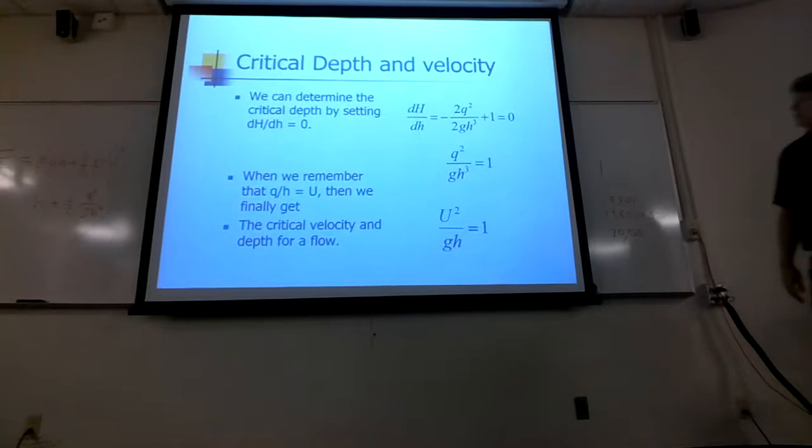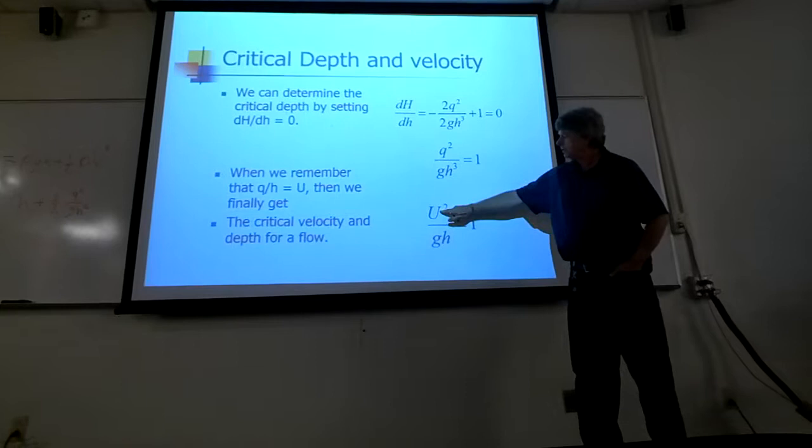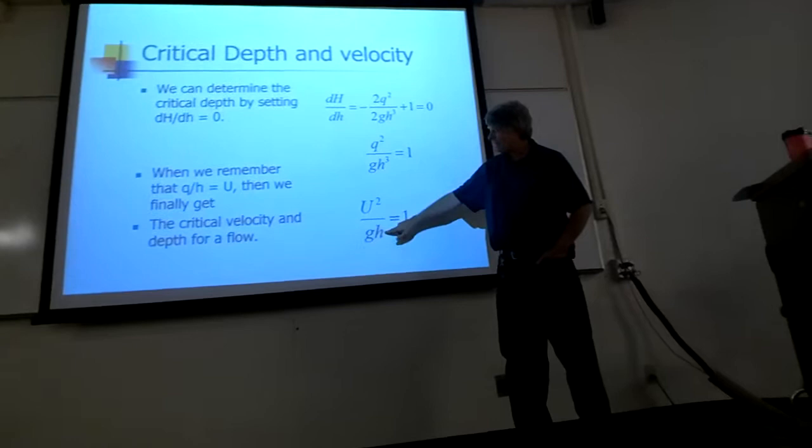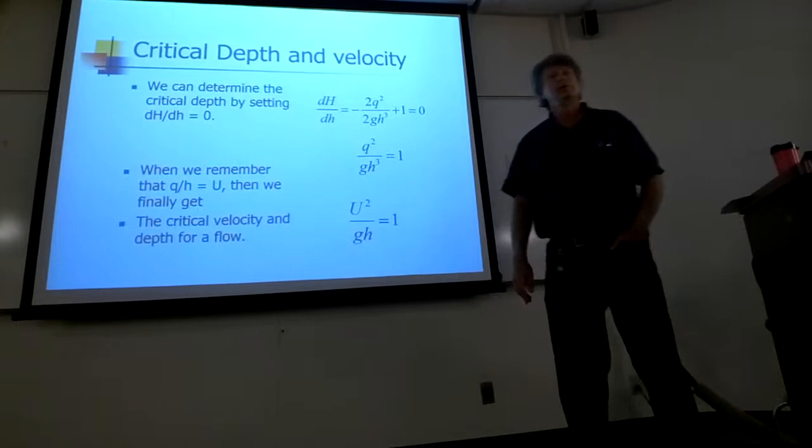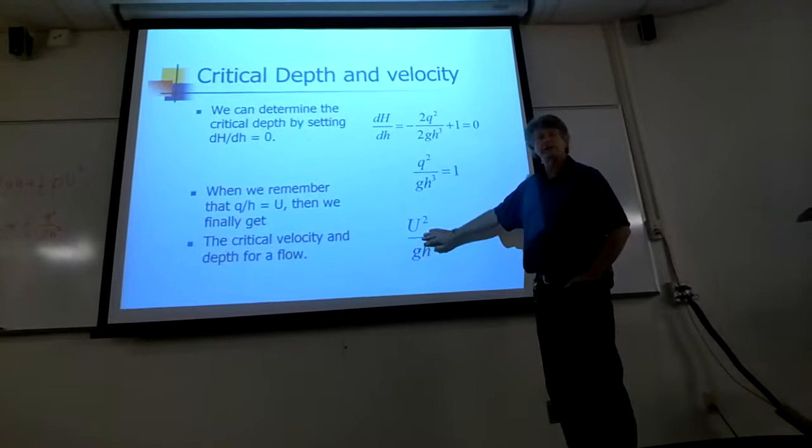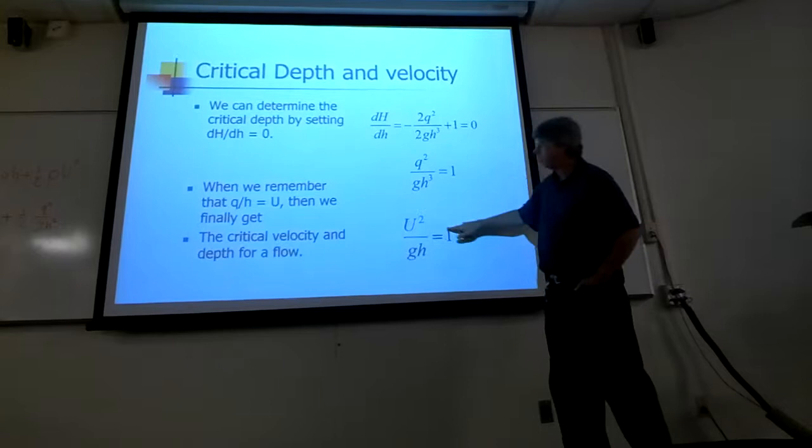And so, here is the final equation. That velocity squared divided by, notice this is how we got rid of the minus one, is divided by the depth is equal to one at the critical point. That's where we held everything. That's where the change in depth with change in energy is zero. So, that tells us what the critical flow is for a stream.